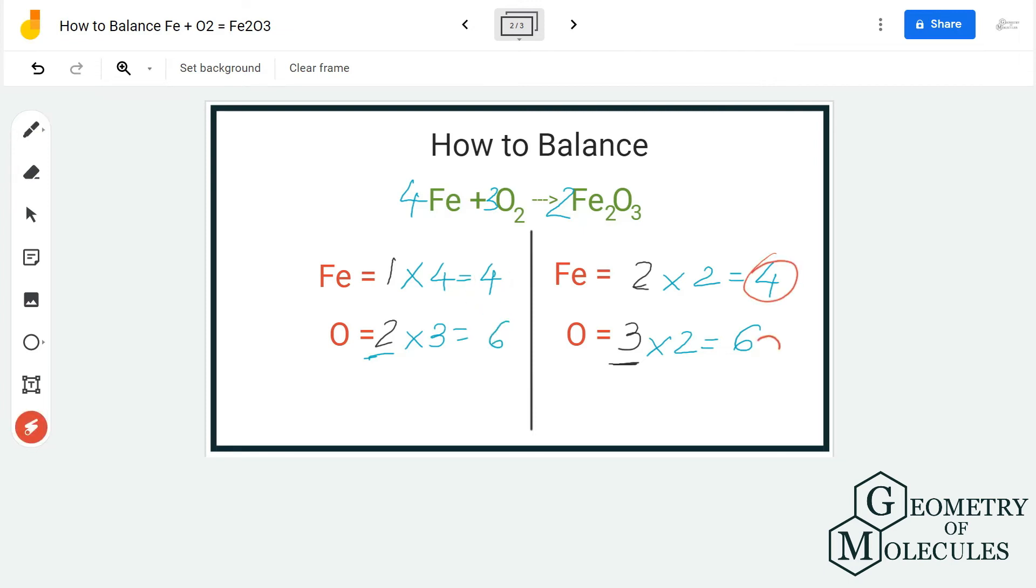And this is how you balance an equation. Remember, every time you come across an element that has an odd number of atoms, try to even it out by adding coefficients, by multiplying it with coefficients, and it will make it easier for you to balance an equation.